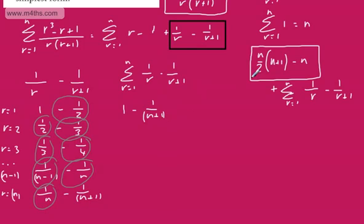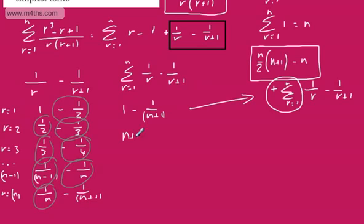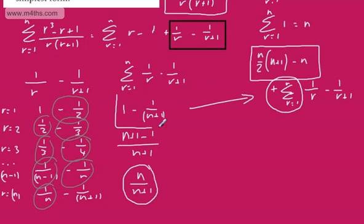Now we add all the parts together. We have n(n+1)/2 minus n, plus n/(n+1). Combining these into a single fraction with common denominator 2(n+1): the first term gives n(n+1)² over 2(n+1), the second term gives 2n(n+1) over 2(n+1), and the third term gives 2n over 2(n+1).